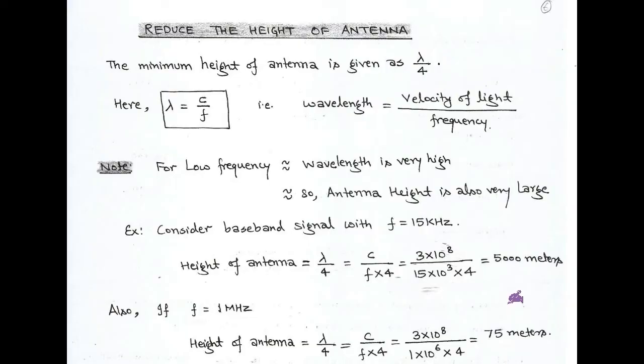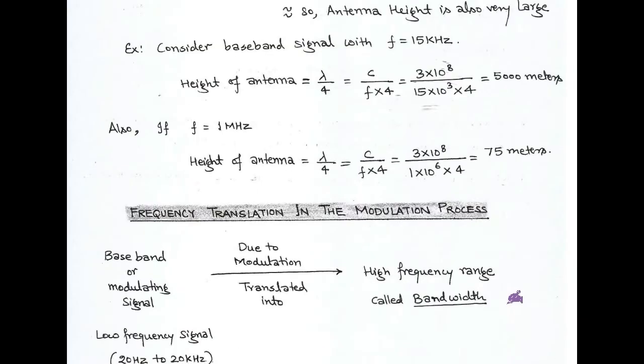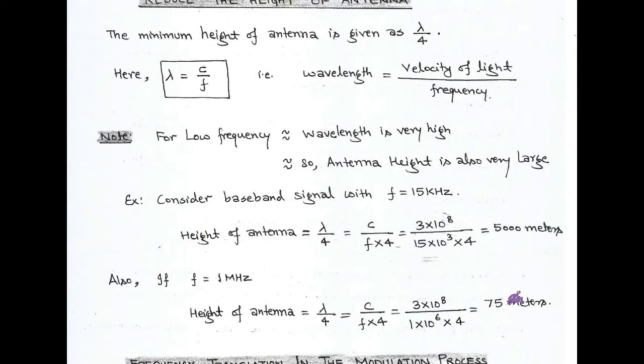Note that the velocity of light, denoted c, has a value of 3 × 10⁸ meters per second.